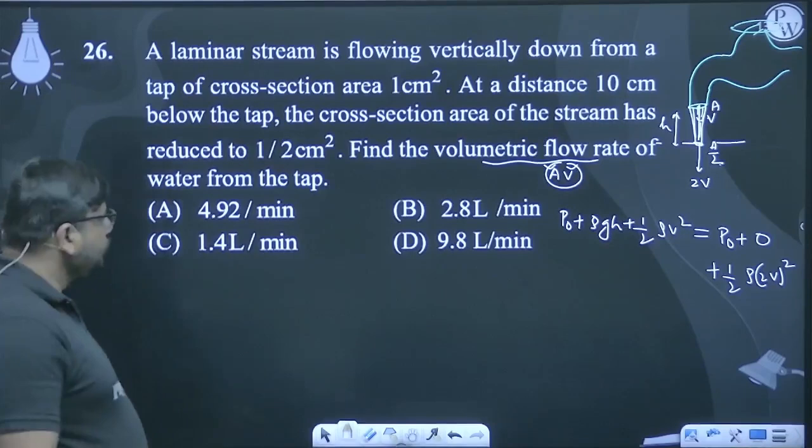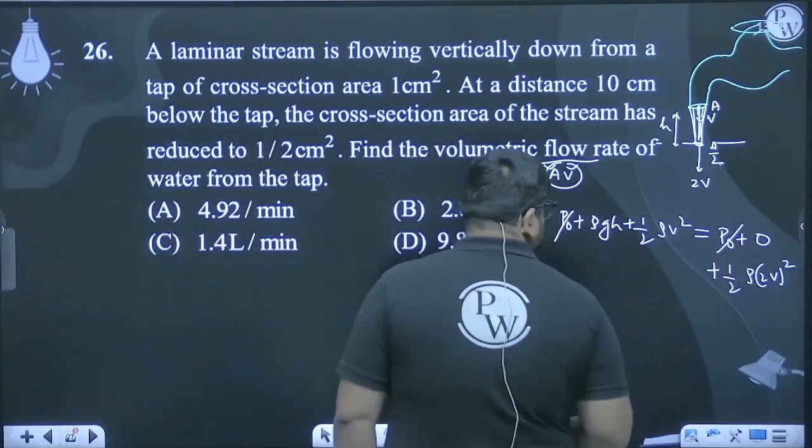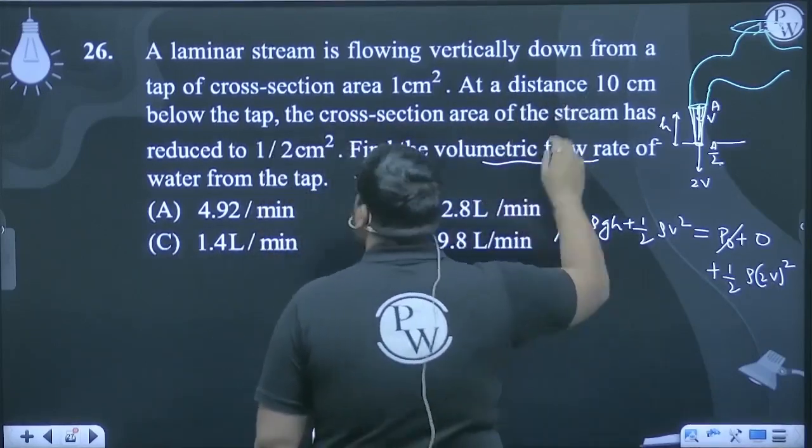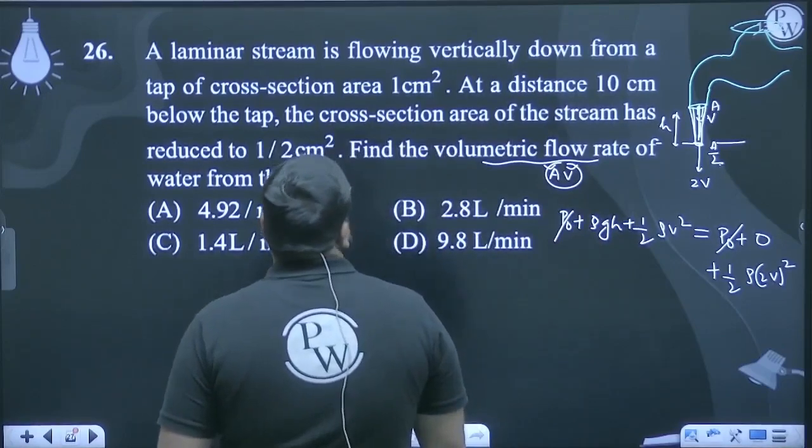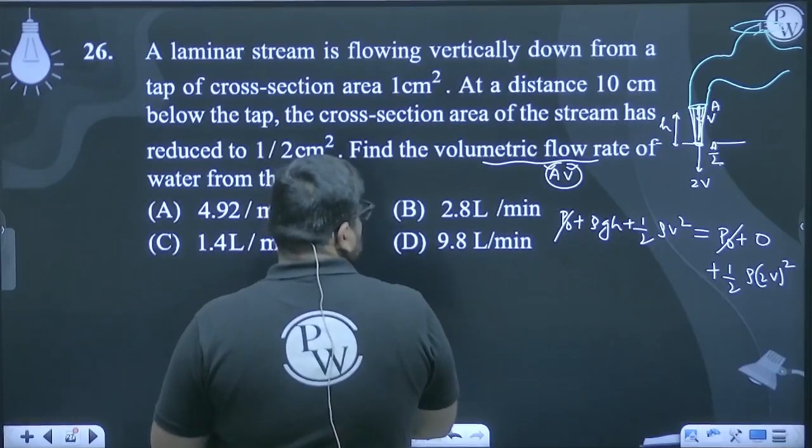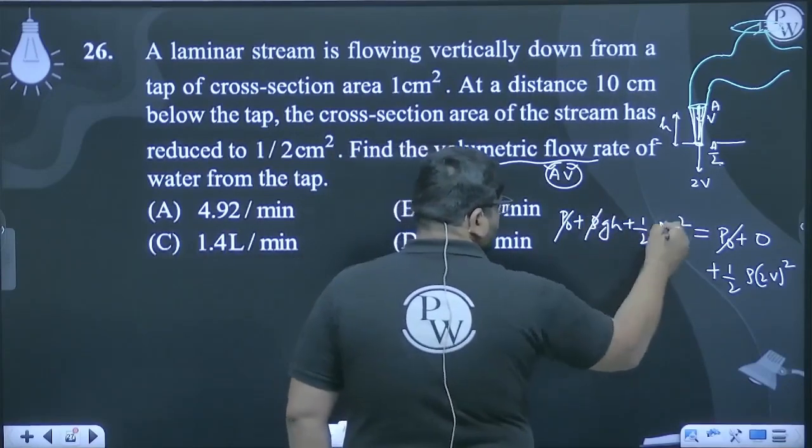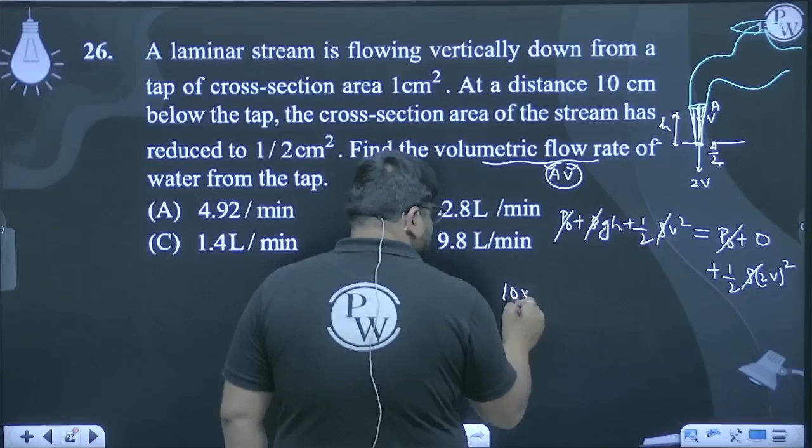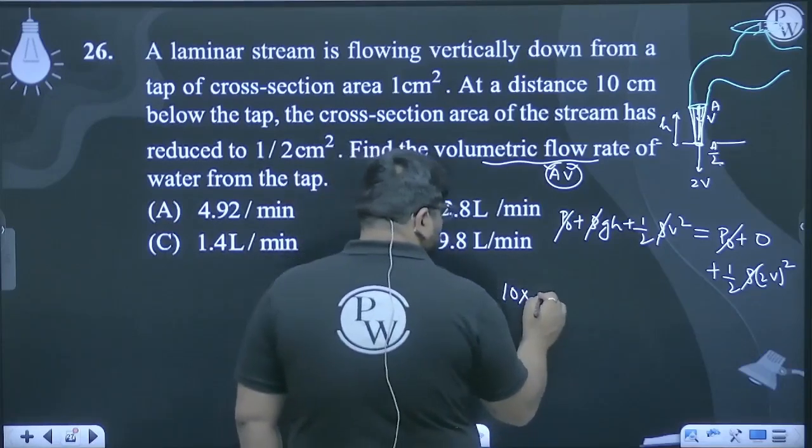So let's solve this. P₀ cancels with P₀. ρ of the flowing liquid - it doesn't matter which one, it cancels out. ρ cancels out, so g into h, g is 10, h value is 10 centimeters means 0.1.